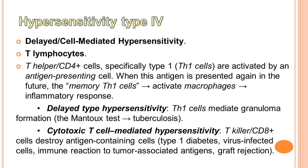We now get to the most important type: hypersensitivity type 4, or delayed or cell-mediated hypersensitivity. It is mediated by T lymphocytes. The T helper CD4 cells, specifically TH1 cells, are activated by an antigen presenting cell. When the antigen appears again, the memory TH1 cells will activate macrophages and cause an inflammatory response, which can ultimately lead to tissue damage. Phản ứng quá mẫn loại 4 được qua trung gian tế bào lymphocytes T. Tế bào TH1 được kích hoạt bởi tế bào trình diện kháng nguyên. Khi kháng nguyên xuất hiện lại, tế bào TH1 nhớ kích hoạt đại thực bào gây phản ứng viêm và tổn thương mô.